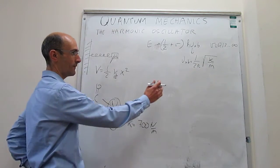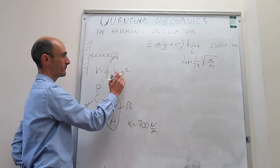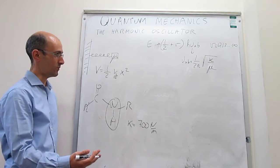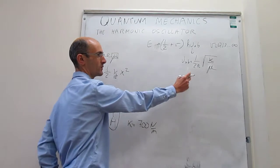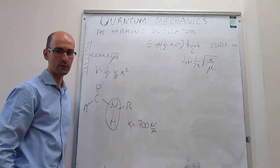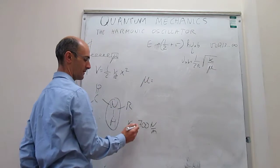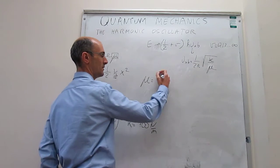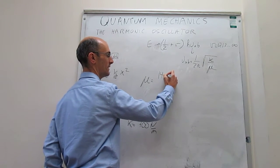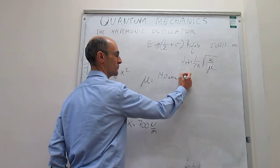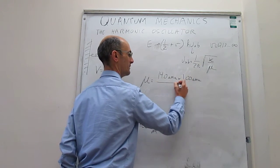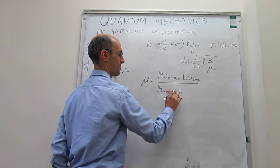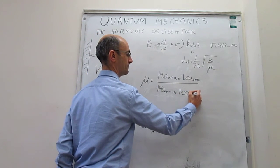To calculate the vibrational frequency, we have the equation right here. In the case of a diatomic molecule, we simply replace the mass by the reduced mass. We have the force constant 700 N/m. We need to calculate the reduced mass: μ = (m_N × m_H)/(m_N + m_H) = (14 AMU × 1 AMU)/(14 AMU + 1 AMU), with three significant figures.